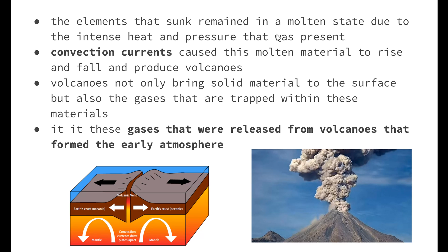Molten means a semi-liquid state — it doesn't become hard, but it also doesn't flow like a normal liquid; it is still able to move. Convection currents have caused this molten material to rise and fall over time, and as a result, produce volcanoes.